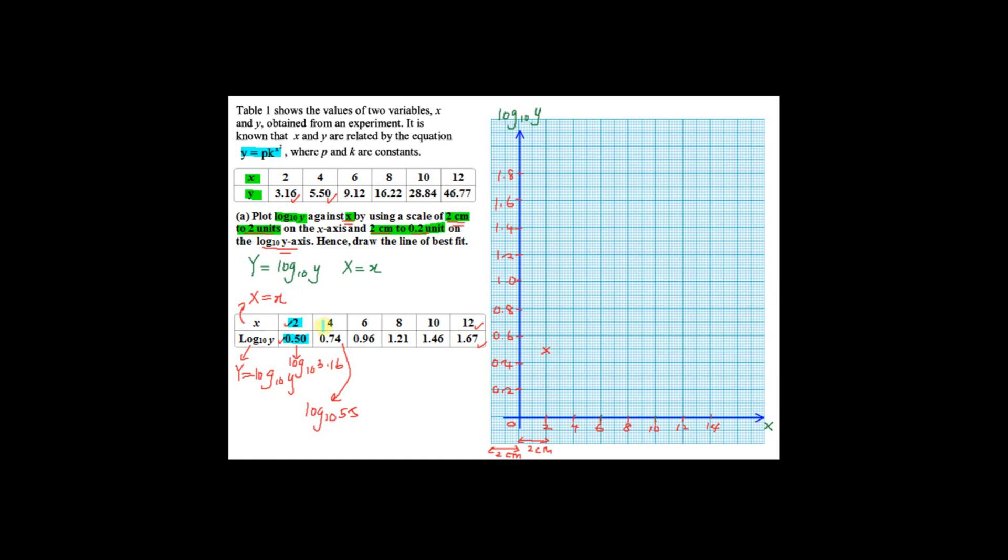The second point you're supposed to sketch is 4, 0.74. So 4 is here, 0.74 will be somewhere around here. Continue, you have to draw 6, 0.96...